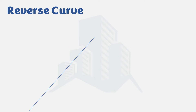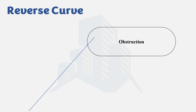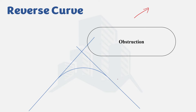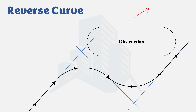Let's say this is our existing route, which could be for a highway or railway. Now let's say we have an obstruction, because of which we cannot continue with this route. We need to change the direction of our route, and that change of direction is provided by a horizontal curve — an arc. By providing a simple circular curve we can change the direction, but to bypass the obstruction we need to provide another curve. The combination of these two arcs is actually called a reverse curve, and this route will then be bypassing the obstruction.